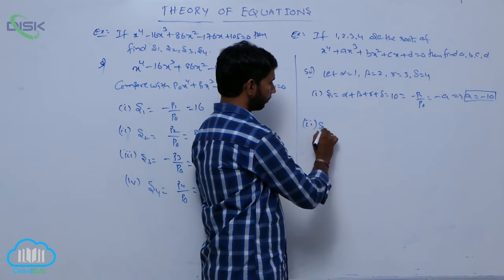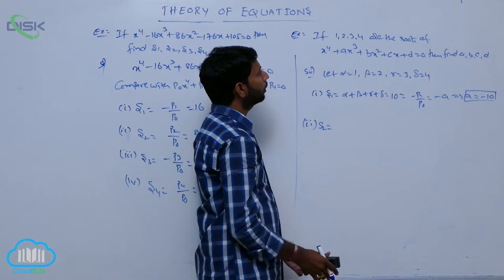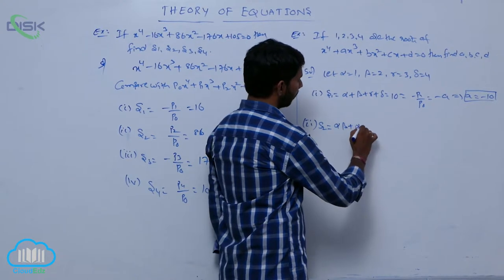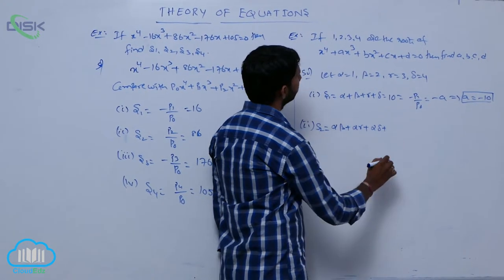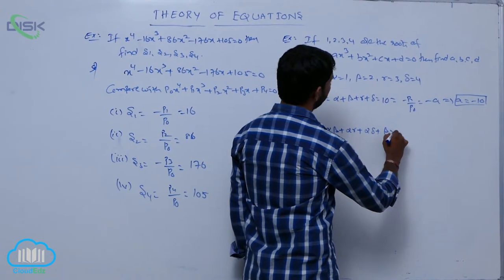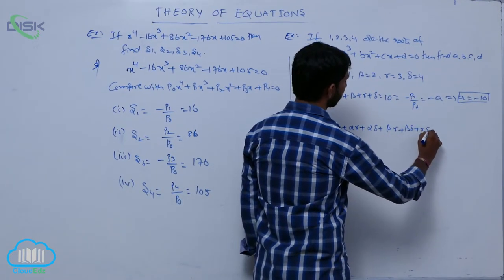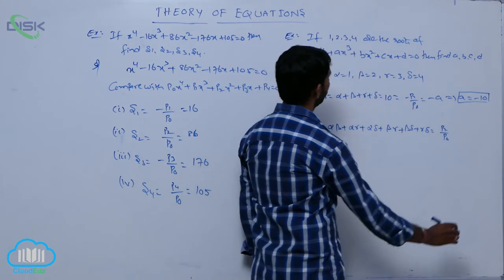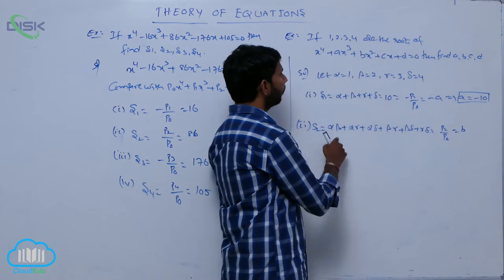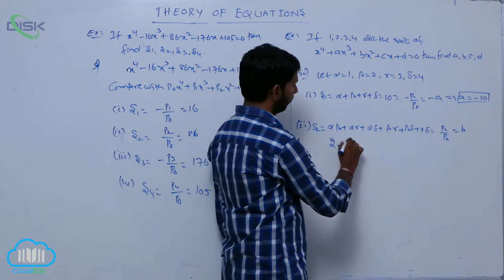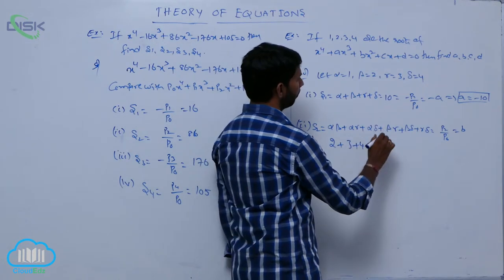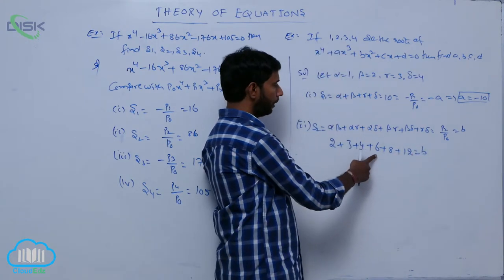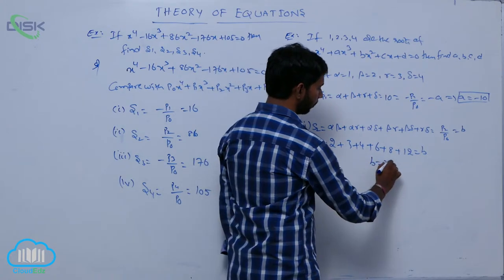Next, s2 means the sum of products of roots taken 2 at a time: alpha*beta plus alpha*gamma plus alpha*delta plus beta*gamma plus beta*delta plus gamma*delta equals p2 by p0 equals b. Computing: 2 plus 3 plus 4 plus 6 plus 8 plus 12 equals 35. Therefore, b equals 35.